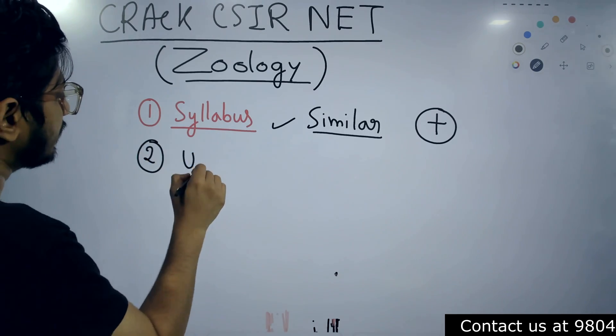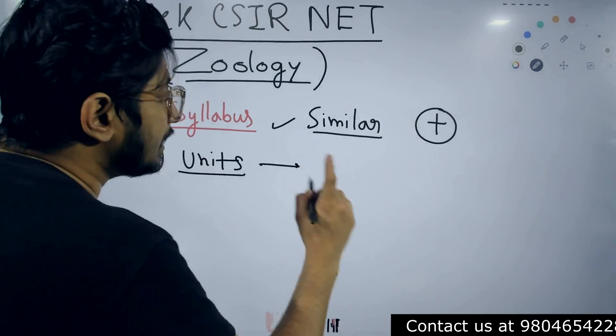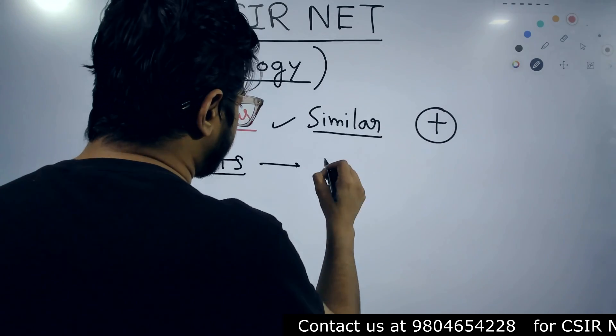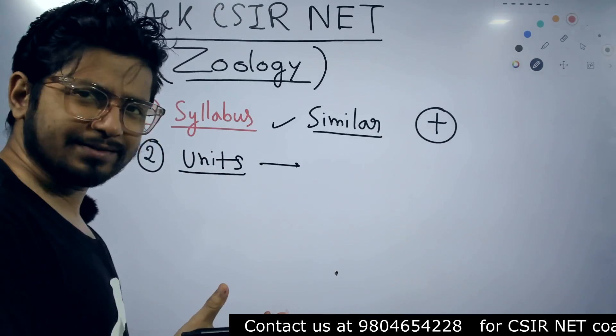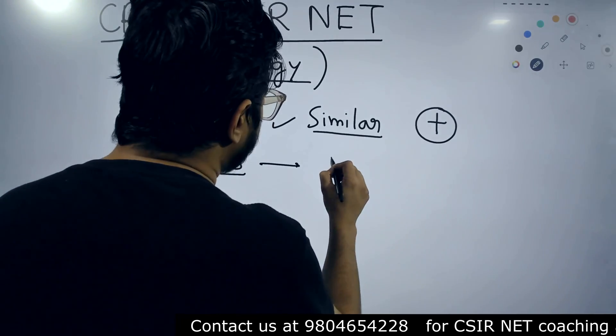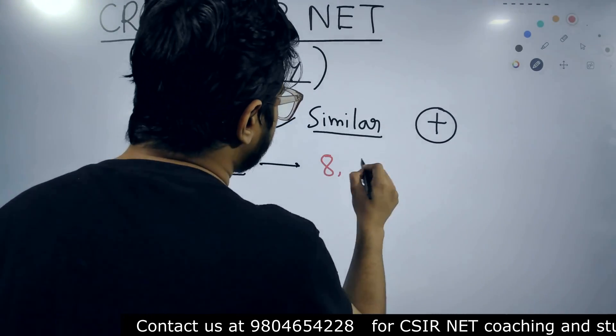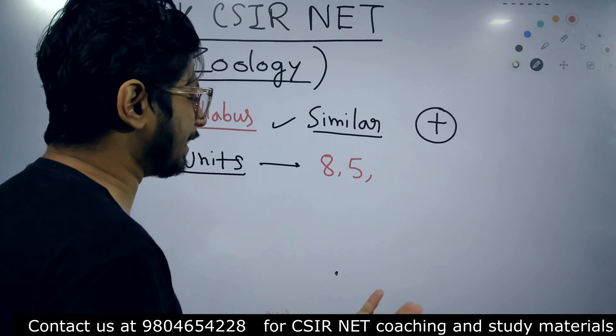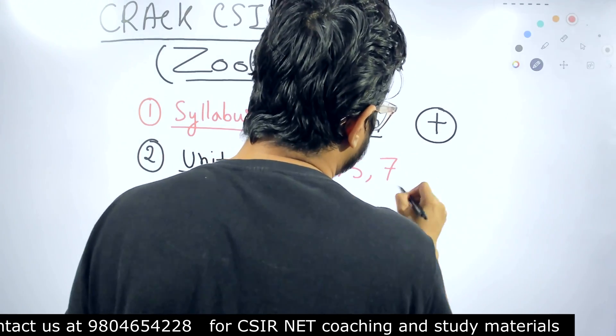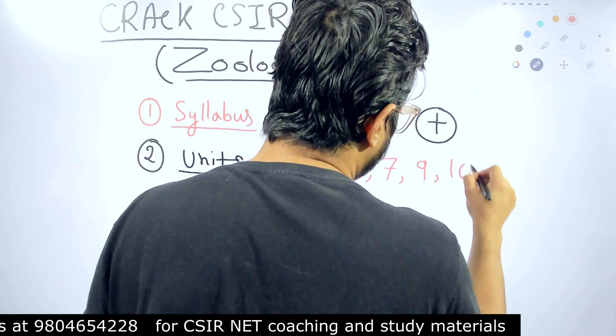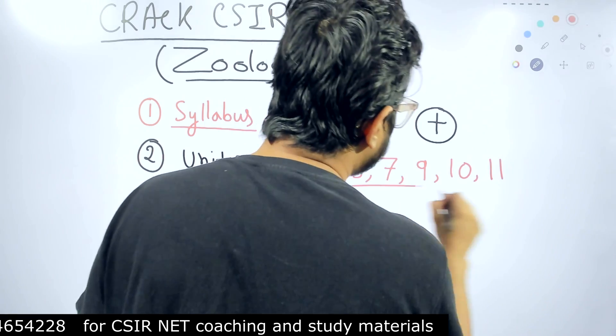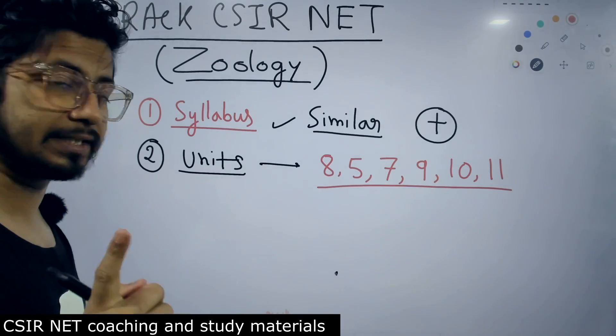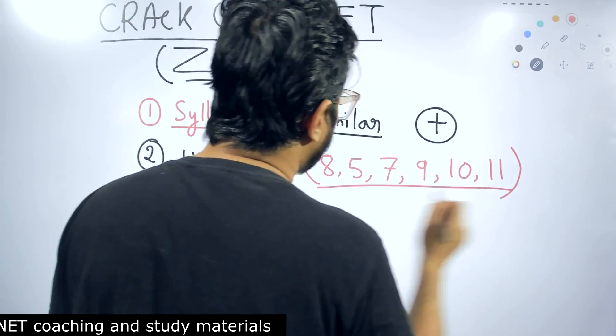If you come from a zoology background, there are units which are common for you. The units you should prepare are the classical units: genetics, that is Unit 8; developmental biology, Unit 5; human and animal physiology; cell biology; ecology and environmental biology; and evolutionary biology. These are the units that are sure shot targets for a student coming from a zoology background to prepare CSIR NET Life Science examination: Units 5, 7, 8, 9, 10, and 11.